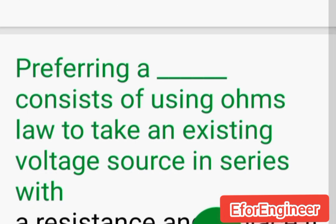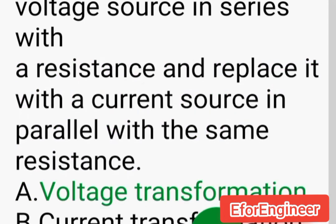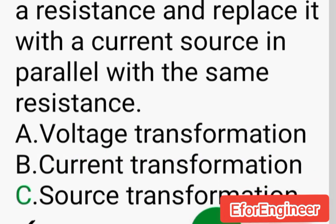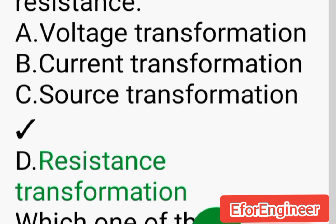Source transformation consists of using Ohm's law to take an existing voltage source in series with a resistance and replace it with a current source in parallel with the same resistance: A. Voltage transformation, B. Current transformation, C. Source transformation, D. Resistance transformation.